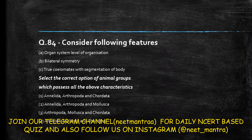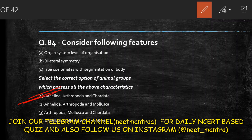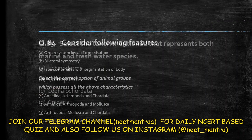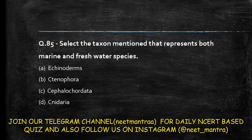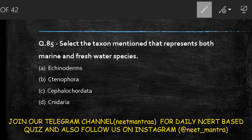Next question: which taxon represents both marine and freshwater species? Options are Echinoderms, Ctenophora, Cephalochordata, or Cnidaria. Echinoderms, Ctenophora, and Cephalochordata are exclusively marine. The answer is option D: Cnidaria, which has both marine and freshwater species.